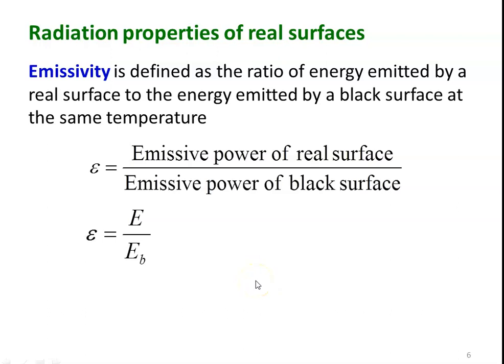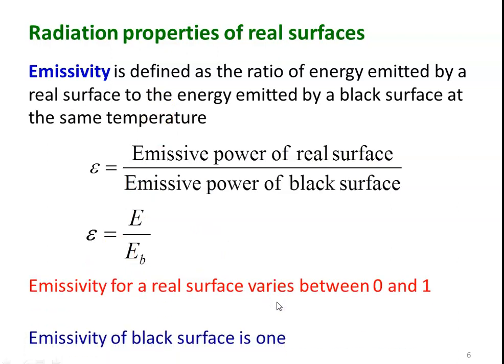First, we define various radiation properties. The first property is emissivity. Emissivity is defined as the ratio of energy emitted by a real surface to the energy emitted by a black surface at the same temperature. The black body is the reference surface for all radiation calculations. Emissivity is defined as epsilon equal to E divided by Eb. The emissivity of a surface varies between 0 and 1, and the emissivity of a black surface equals 1, meaning the black surface emits maximum power at a given temperature.